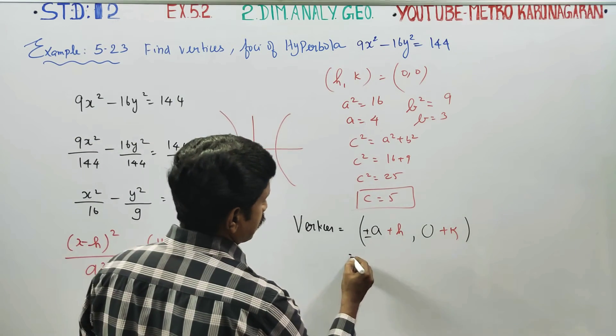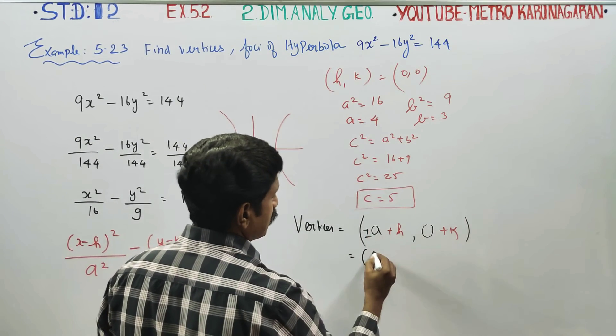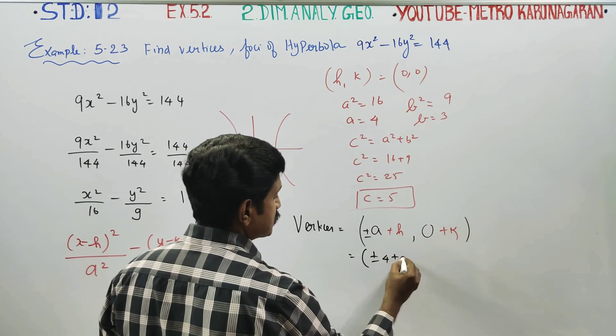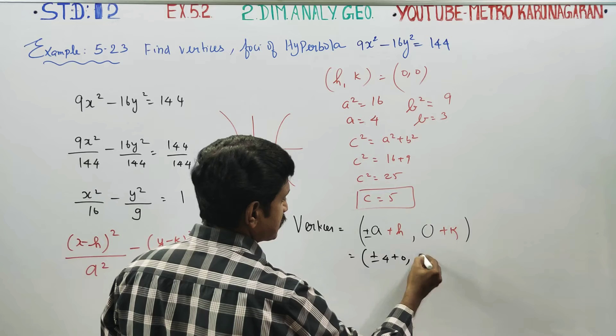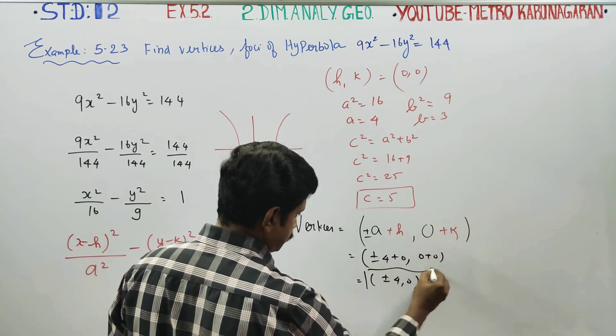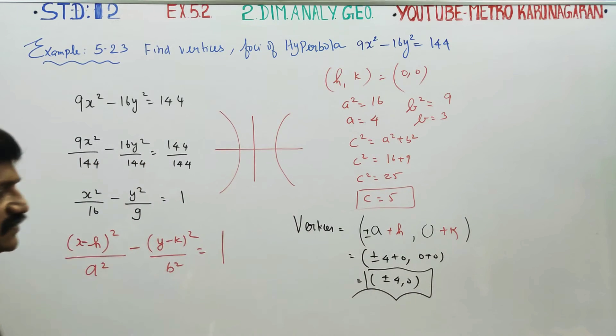I have found the value of a. My a value is 4. Therefore, plus or minus 4, 0 is my answer for the vertices.